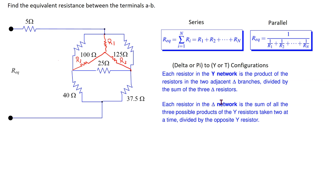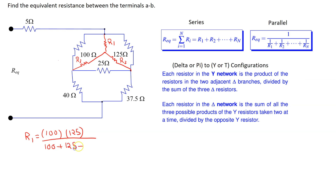Let's apply this principle. R1 is given by the product of the two adjacent delta resistors, which is 100 times 125, divided by the sum of the three delta resistors: 100 plus 125 plus 25. This equals 12500 divided by 250, which comes out to 50 ohms.